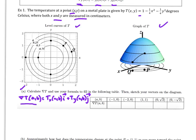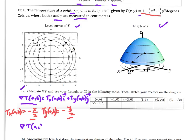To find the gradient of T we need the partials. The partial with respect to x is negative x over 2, and the partial with respect to y is negative y over 2. The gradient at point (a, b) is equal to the partial with respect to x — which is negative x over 2 — in the i direction, and the partial with respect to y — negative y over 2 — in the j direction. Note that the gradient is a vector with i and j tags.